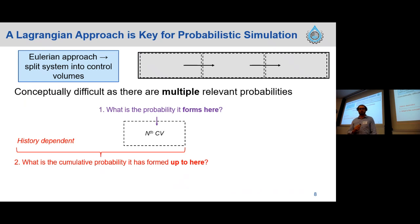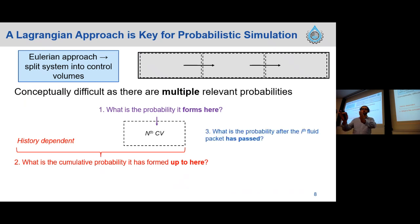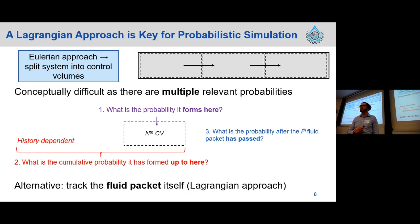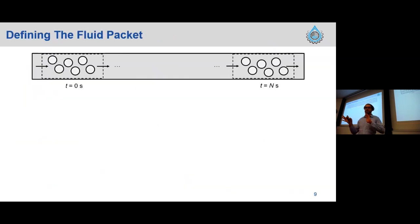Interestingly, the formation probability depends on the history of our fluid going through the entire system. We also need to know the probability of formation after the i-th fluid packet has passed when extending to production over a week, a month, or a year. Keeping track of all these and mapping them to control volumes is quite challenging. An alternative is to simply track the fluid packet itself — this is called taking a Lagrangian approach.